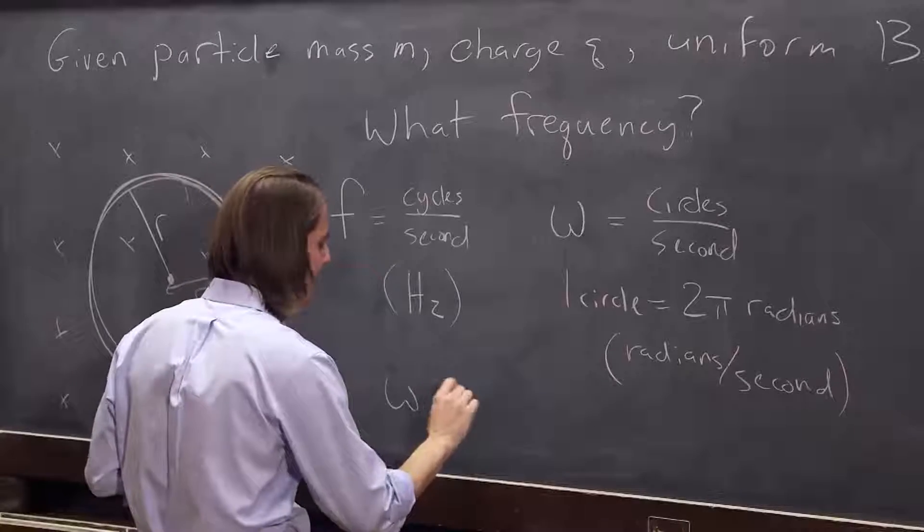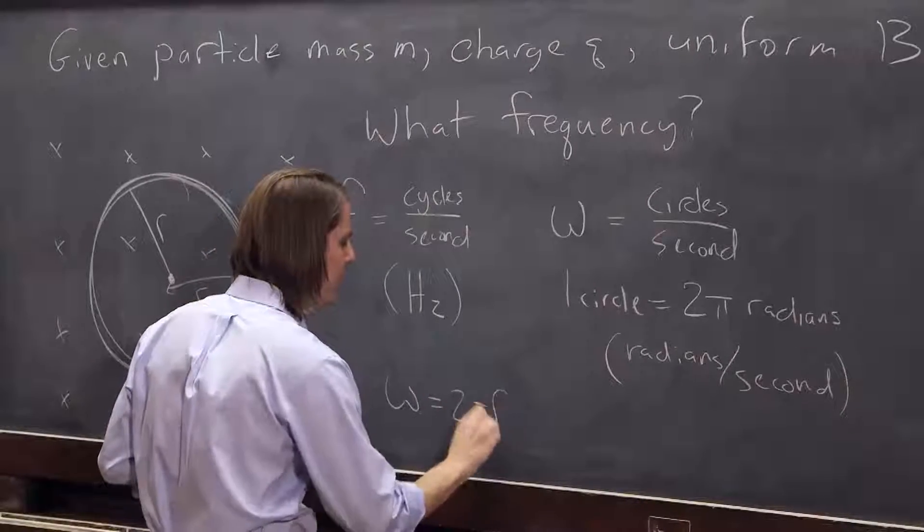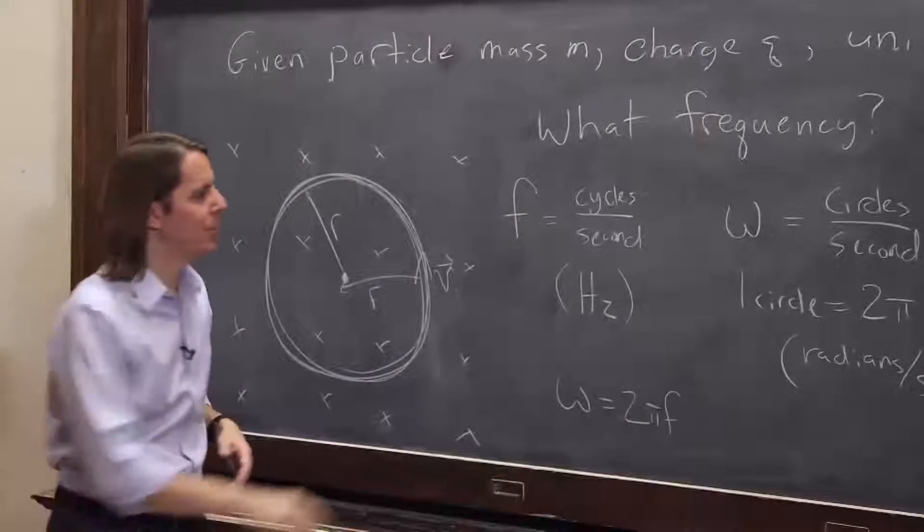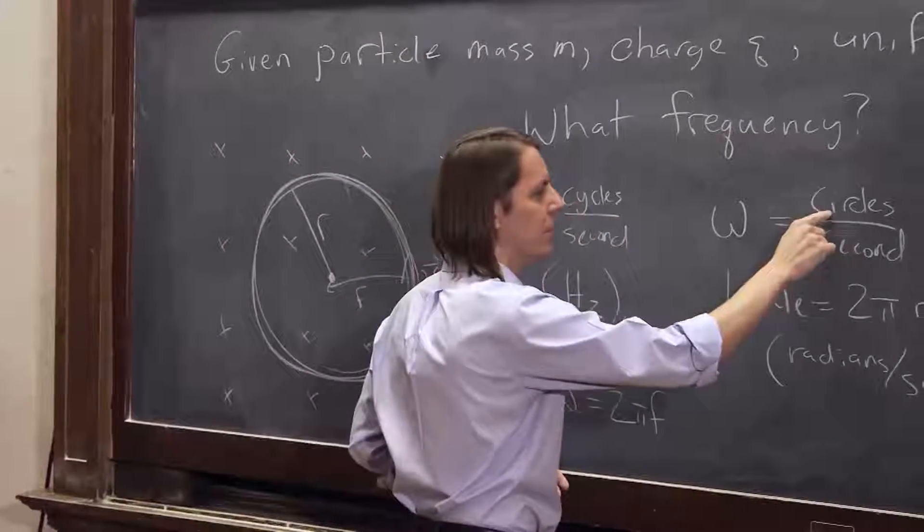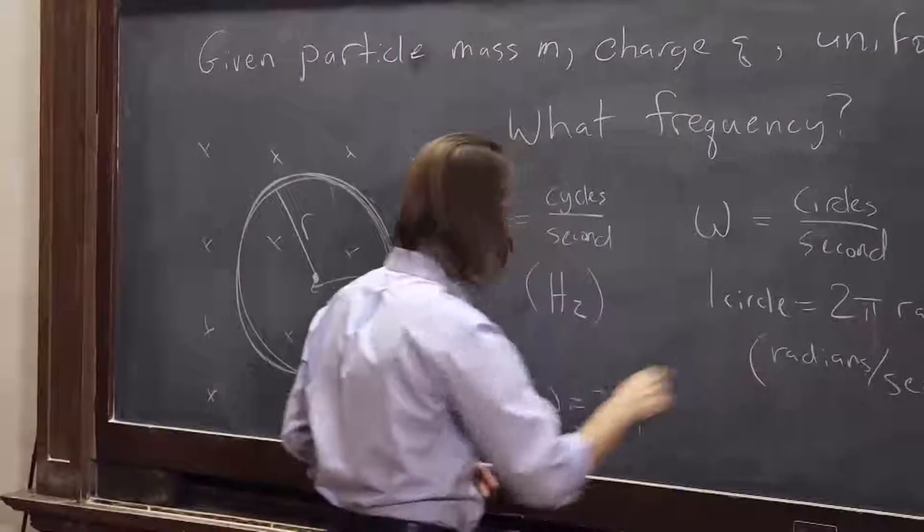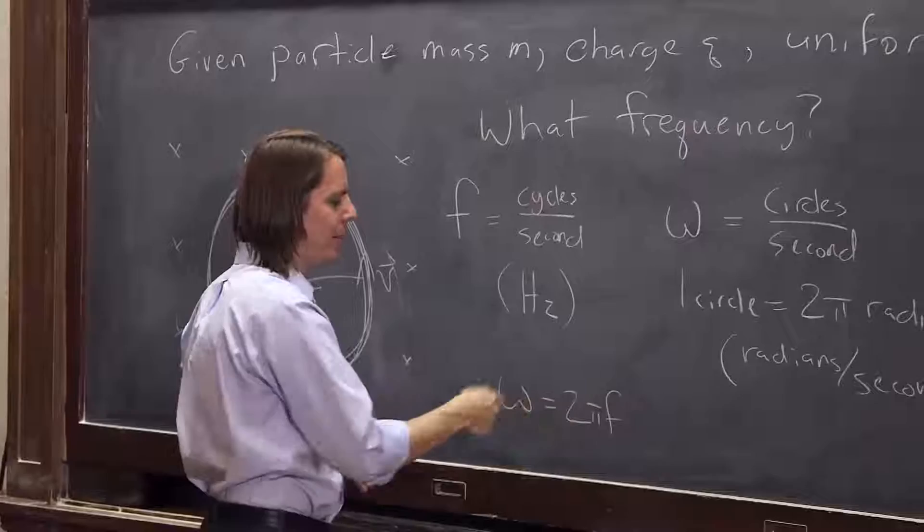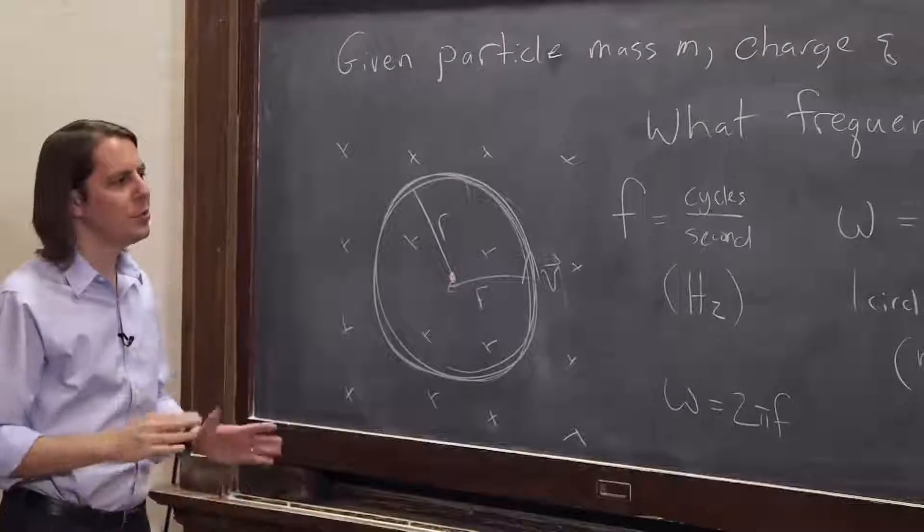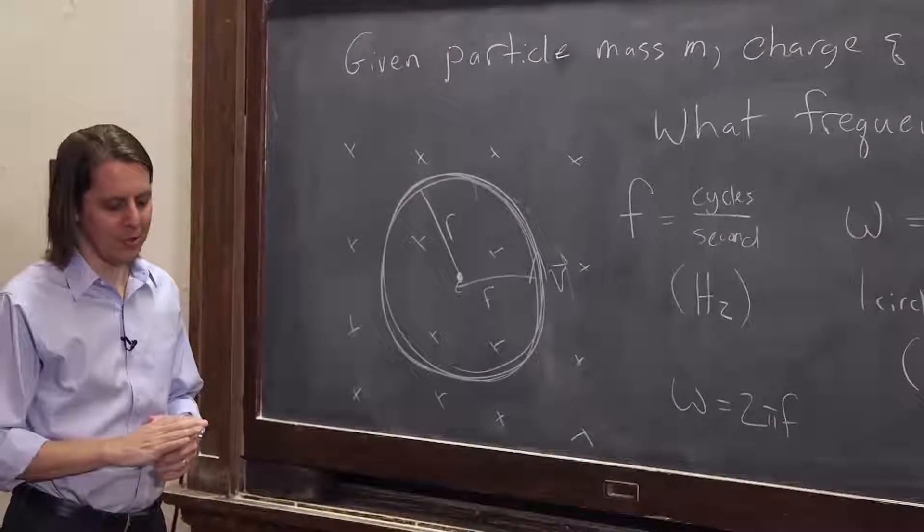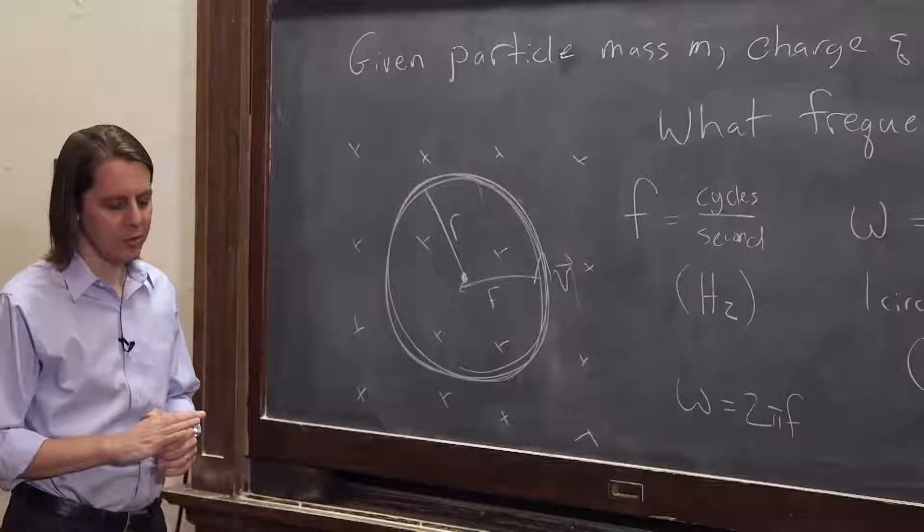Omega, in any experiment, any problem you're doing, is always two pi times f. Because if one cycle is a circle, a circle is two pi radians, so you just multiply your cycles by two pi and you get omega. So if you're not used to omega, get used to it because we're going to be using it a lot. That's what we usually use in physics.